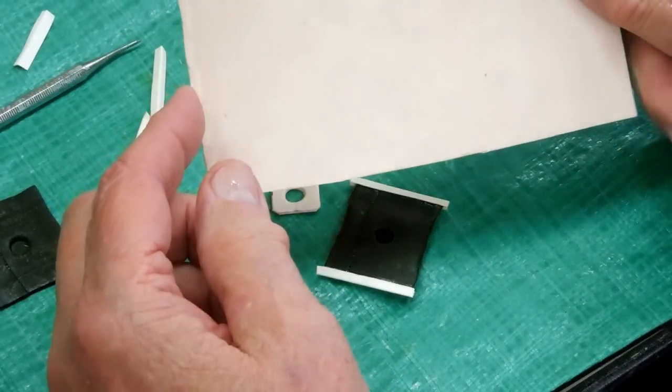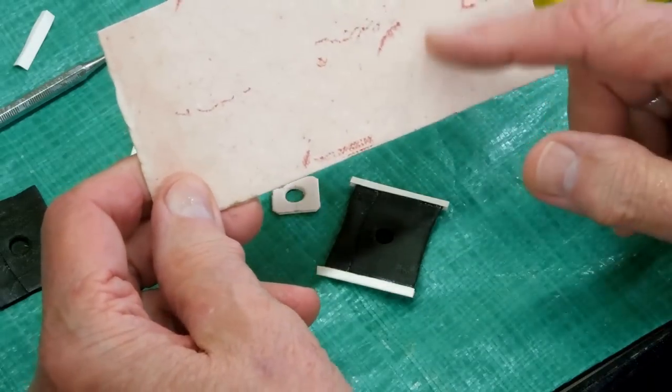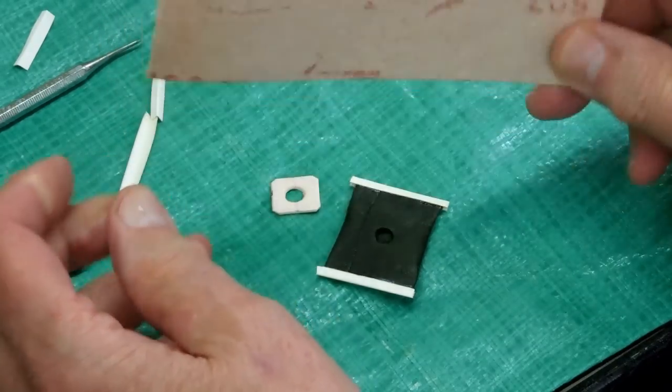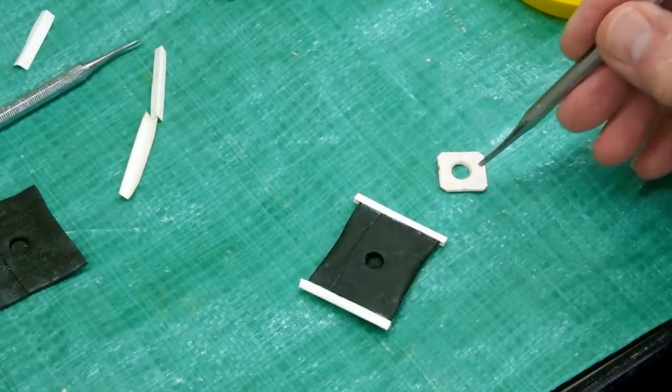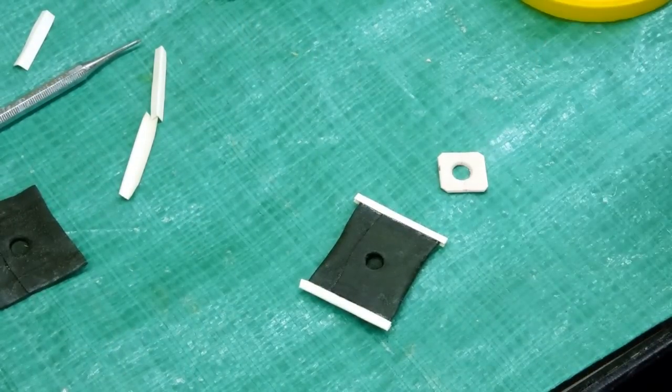This is some stiffening material sold at a leather store. They use this to stiffen the inside of a purse or whatever you're making out of leather. I cut out a 5 1⁄8 inch square, punched a 1⁄4 inch hole in the center.